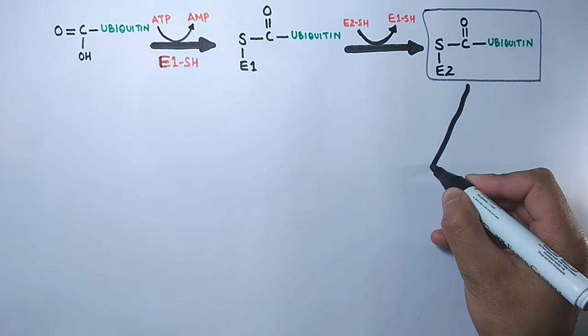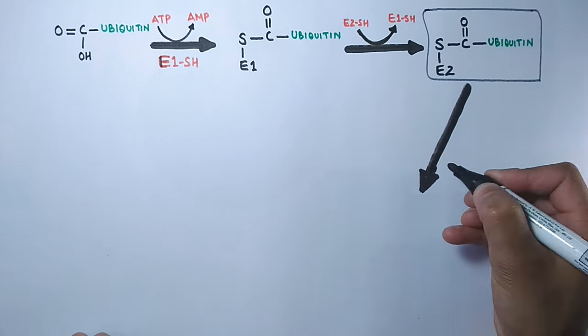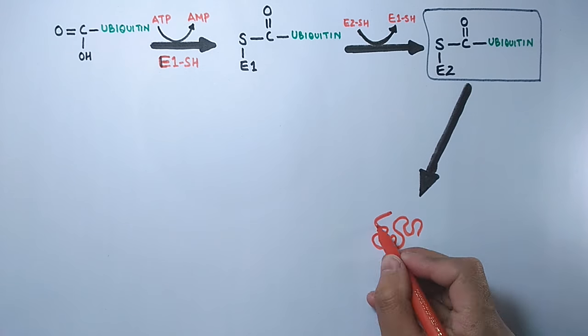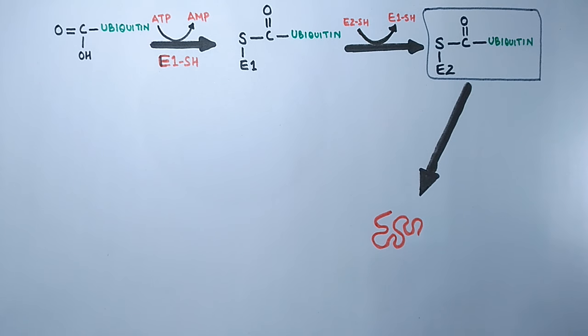Now the ubiquitin is conjugated to the E2 enzyme, and we have a target protein which needs to be tagged with this ubiquitin protein.